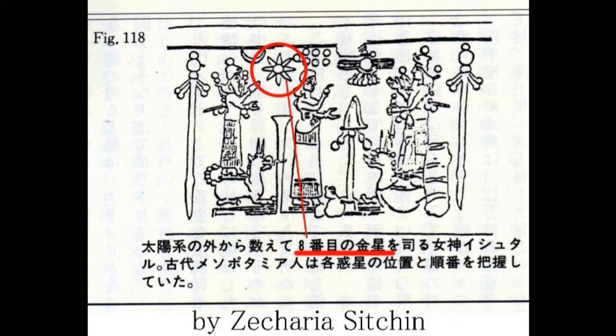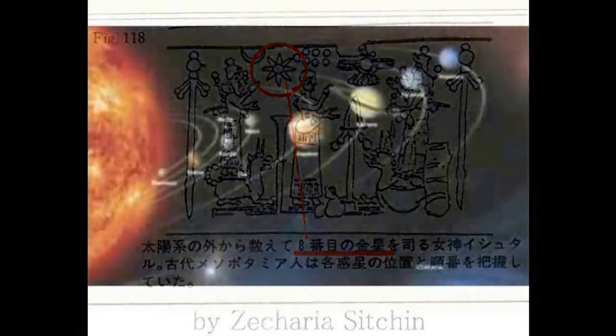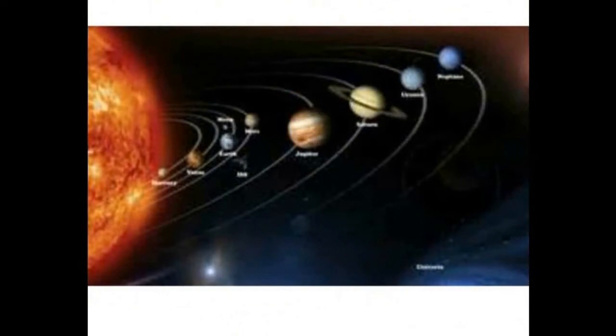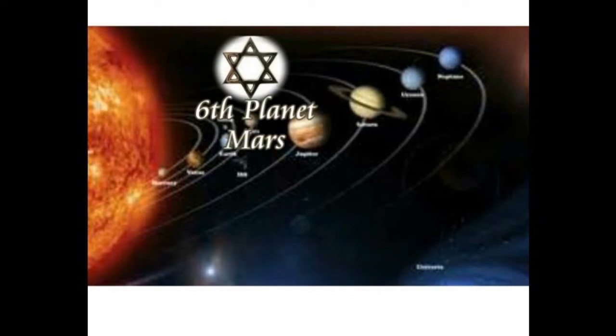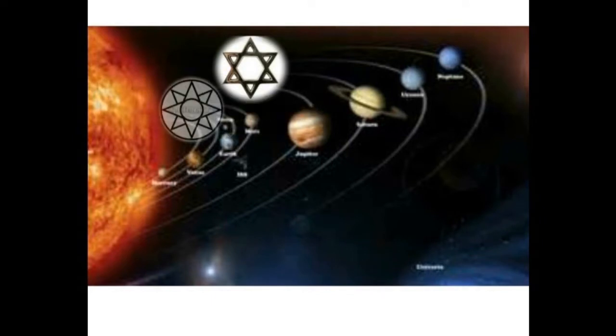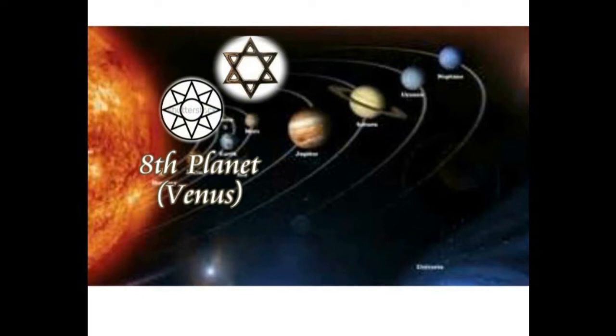その絵の中に、六方向に伸びる星が描かれていたというのです。この星とダビデの星は、大変よく似ています。また、別の写絵の中には、八方向を示す金星が描かれています。その下にいるのはイスターです。イスターのシンボルマークは、金星ということになります。この六と八を手がかりに、太陽系の惑星と当てはめてみます。六を火星と置くならば、八は金星ということになります。